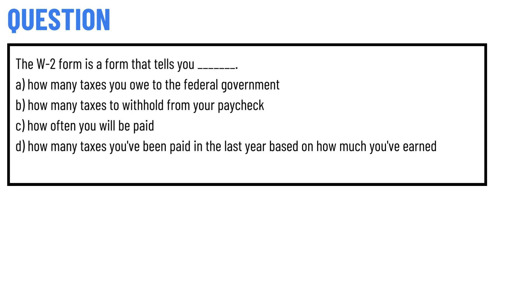Option C: how often you will be paid; option D: how many taxes you have been paid in the last year based on how much you have earned.